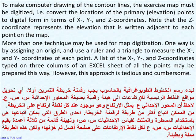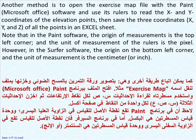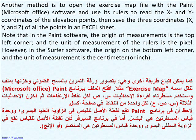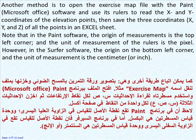However, this approach is tedious and cumbersome. Another method is to open the Exercise Map file with the Paint Microsoft Office software and use its rulers to read the X and Y coordinates of the elevation points. Then save the three coordinates X, Y, and Z of all the points in an Excel sheet. Note that in the Paint software, the origin of measurements is the top left corner, and the unit of measurement of the rulers is the pixel. However, in the Surfer software, the origin is on the bottom left corner and the unit of measurement is the centimeter.